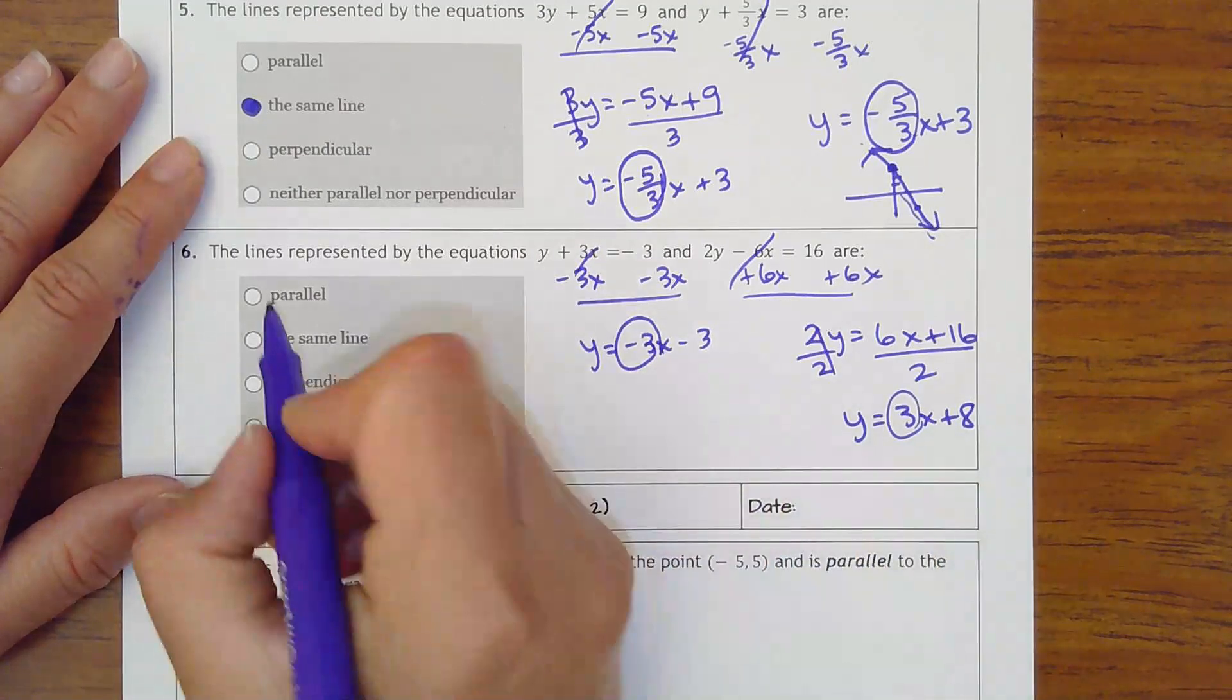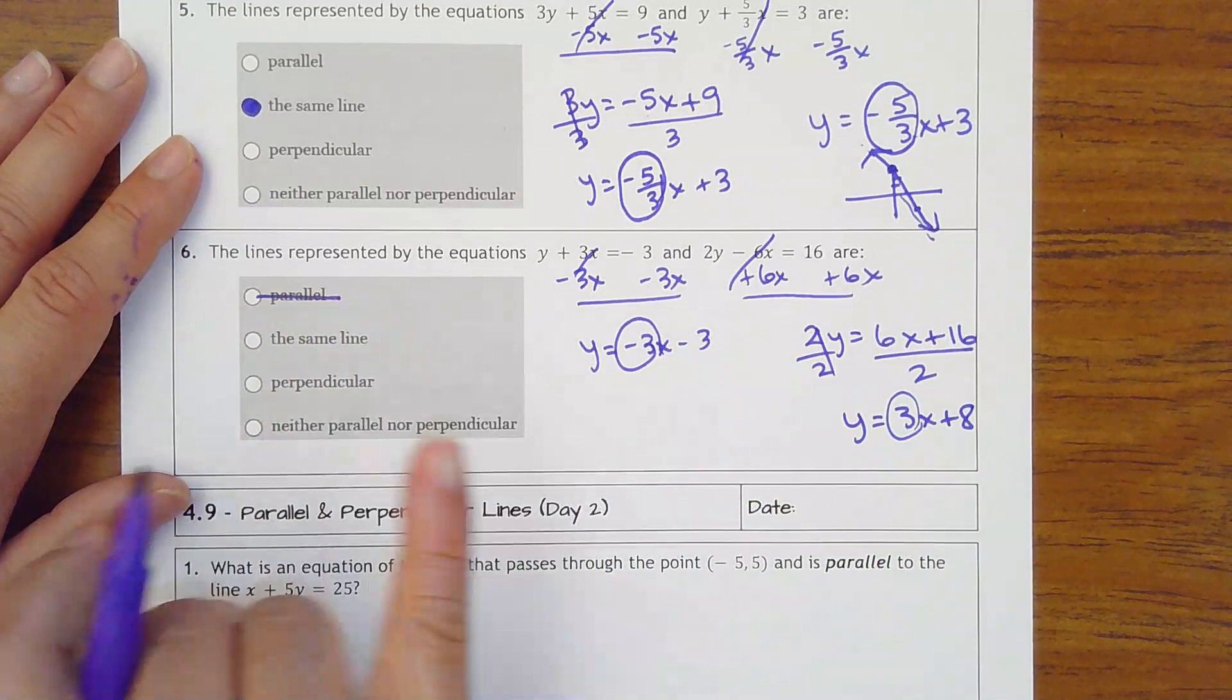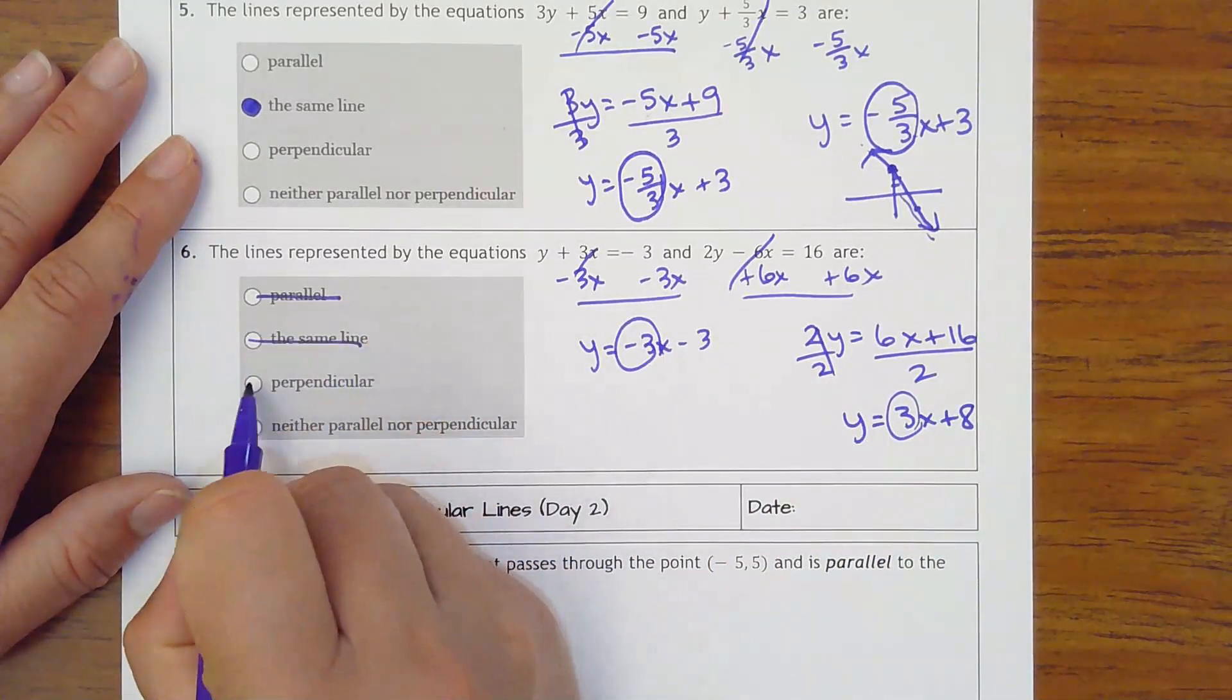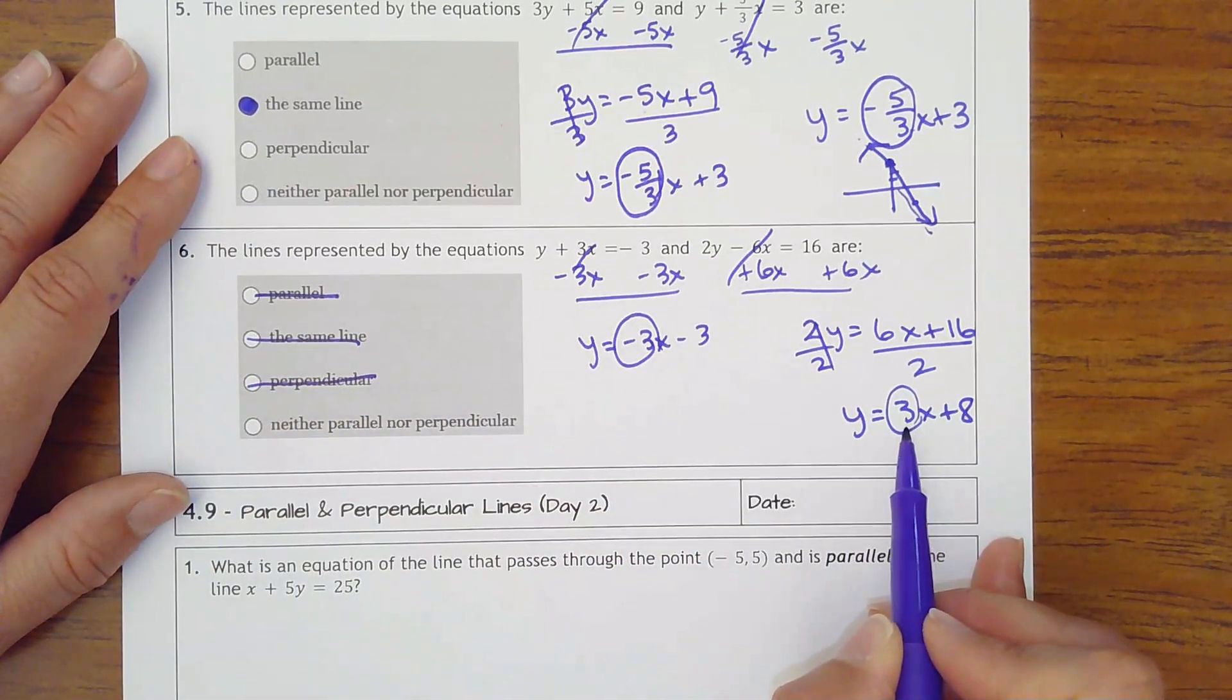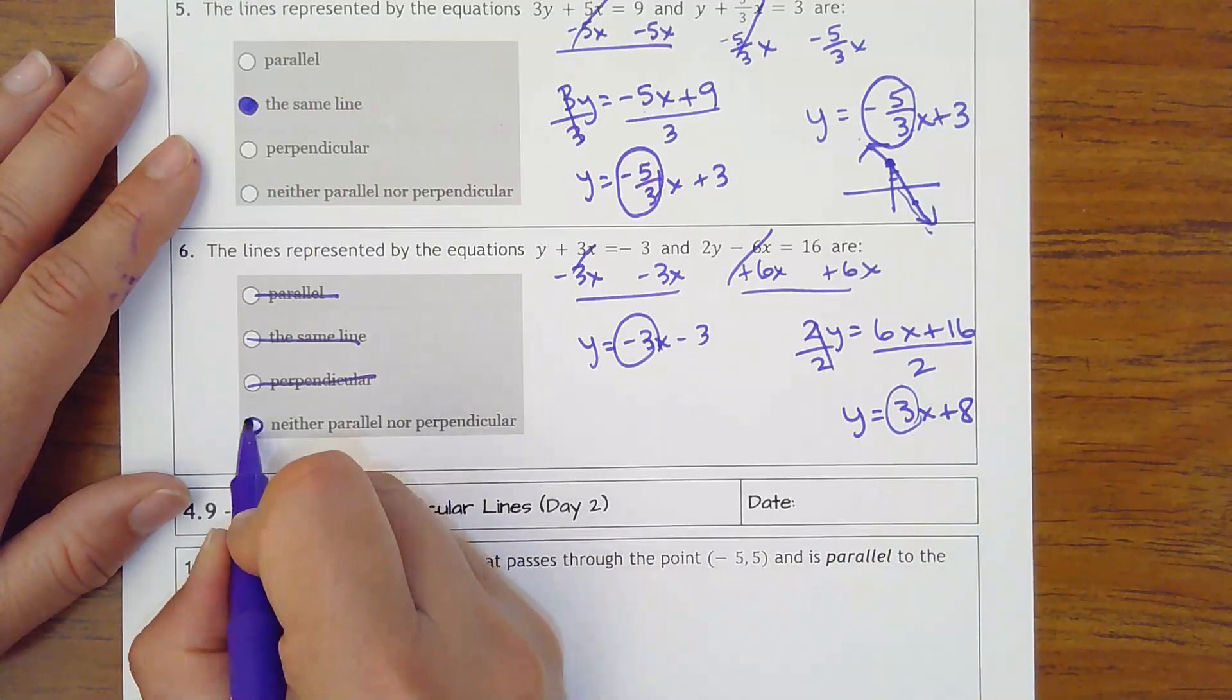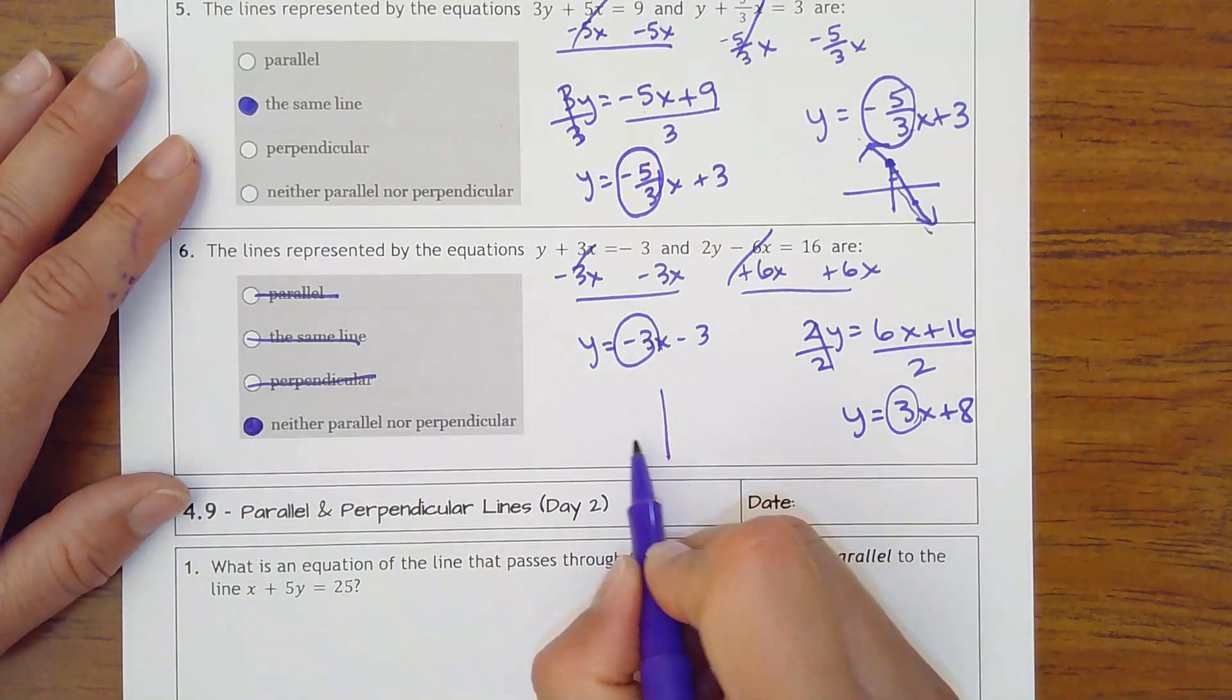So they're not parallel because they're not exactly the same number. They're definitely not the same line. They're also not perpendicular because this would have to be 1 third. So they're not parallel or perpendicular. But what does that mean then?